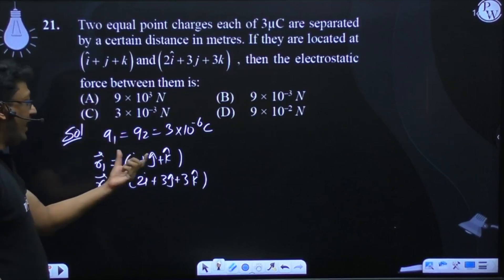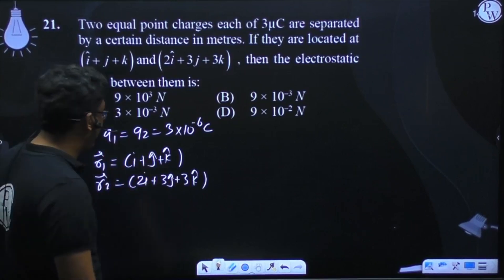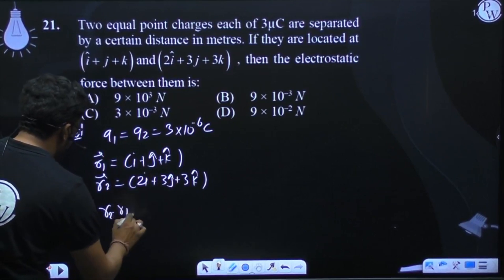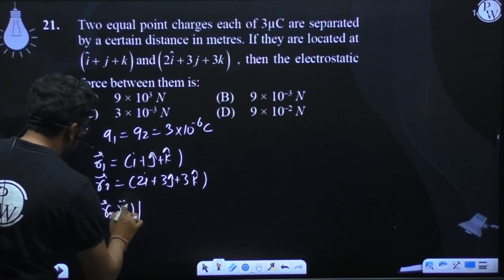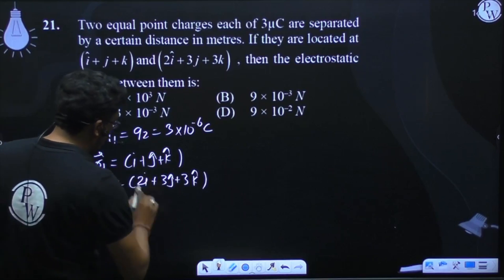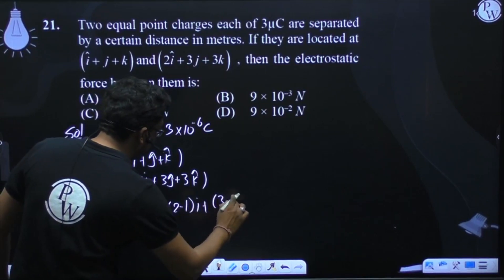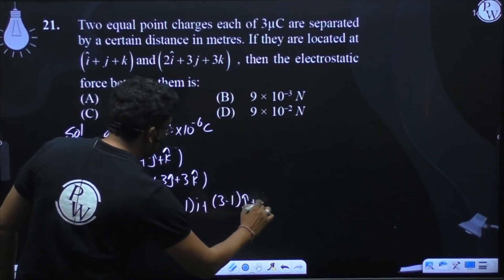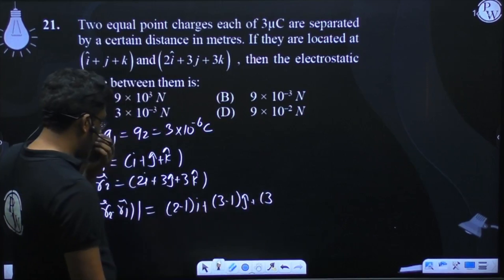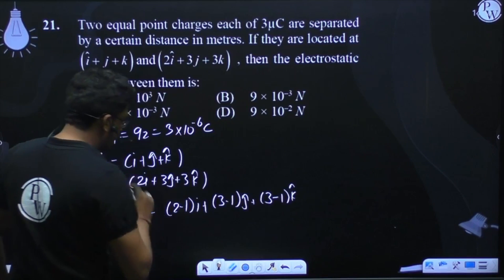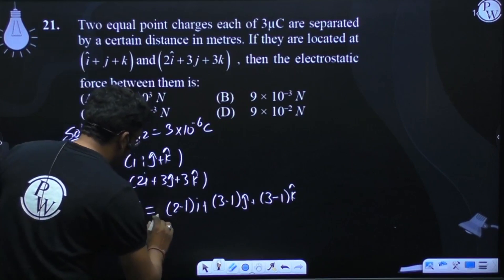So basically when position vectors are given, to find distance we take the magnitude of r2 minus r1. When you calculate this you get 2 minus 1 i cap plus 3 minus 1 j cap plus 3 minus 1 k cap. When we find the magnitude,